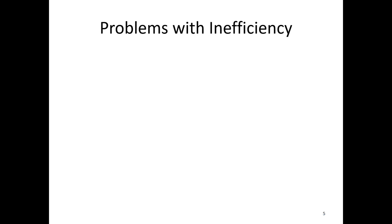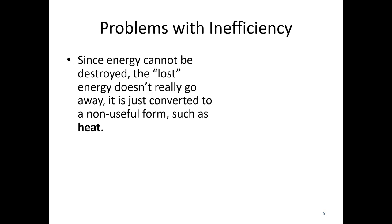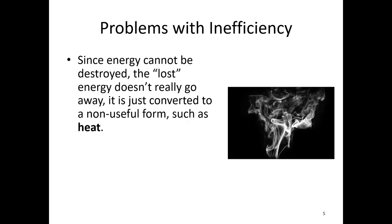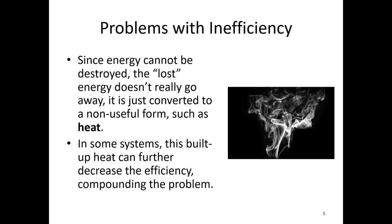We want a system where efficiency is as high as possible, but invariably we lose some energy. Since energy cannot be destroyed, the lost energy doesn't go away — it's just converted to a non-useful form, generally heat. When we have a lot of heat, we get smoke, which is a sign of inefficiency in electronics or a transmission. This built-up heat can further decrease efficiency and cause cascading problems. In a transmission, too much heat can burn off the lubricant, making the system even less efficient.